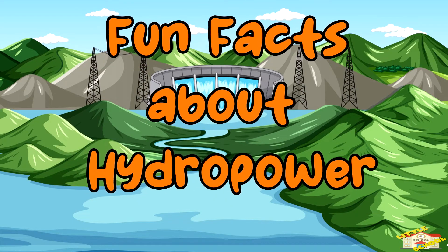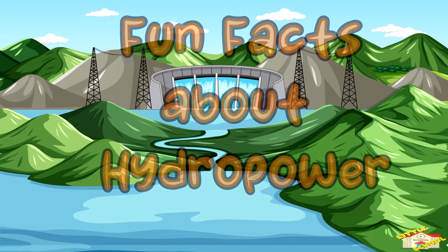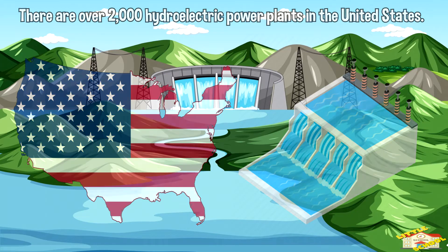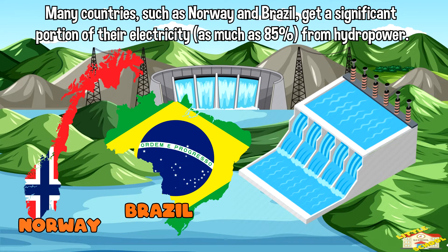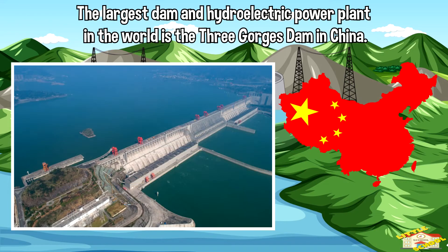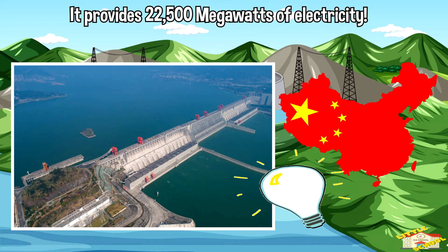Now here are fun facts about hydropower. There are over 2,000 hydroelectric power plants in the United States. Many countries such as Norway and Brazil get a significant portion of their electricity — as much as 85% — from hydropower. The largest dam and hydroelectric power plant in the world is the Three Gorges Dam in China, which provides 22,500 megawatts of electricity.